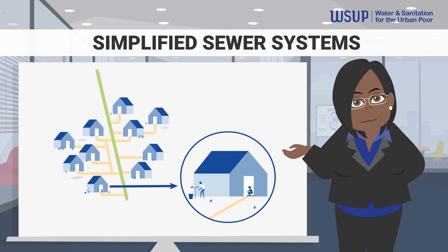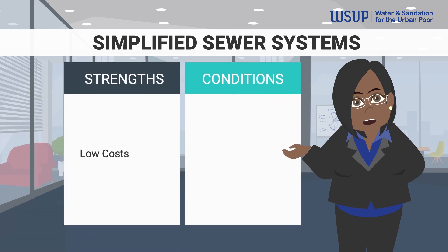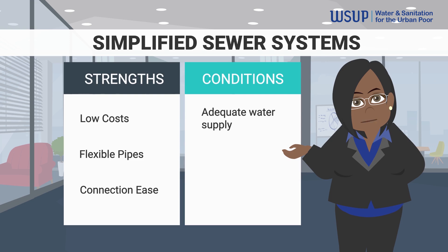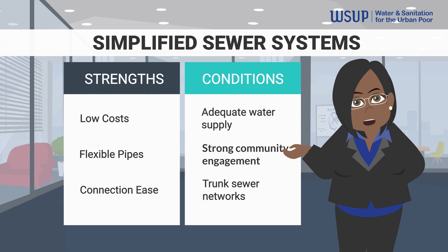Conceptually, simplified sewer systems have several strengths making them well suited to densely populated informal settlements. These include relatively low costs, flexible pipes to enable manoeuvrability, and ease of connection. It must be emphasised that simplified sewer systems require specific conditions to be effective, including adequate water supply to support flush toilets, strong community engagement to support effective system maintenance, and the existence of trunk sewer networks to which these systems can be connected. However, customer satisfaction with the model was found to be high, and the model is viewed as both sustainable and scalable by the mandated city authorities.